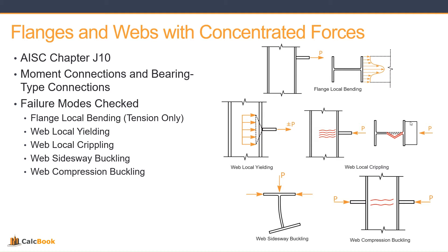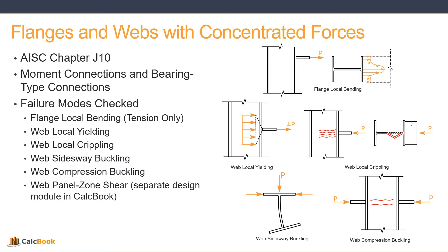We have web compression buckling where we have opposing compressive forces, which causes buckling in the web of that column. We would get this typically if we have a moment connection under dead loading, and both of the bottom flanges of the beam pushing on the column would create that compression buckling in the web. The last one is web panel zone shear — we actually have a separate design module in CalcBook for this, with a lot of different parameters, so we'll do a separate video focusing on web panel zone shear.